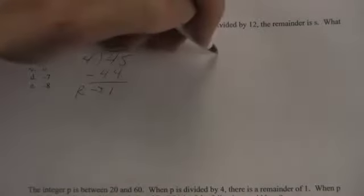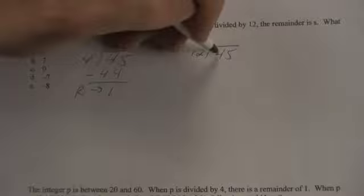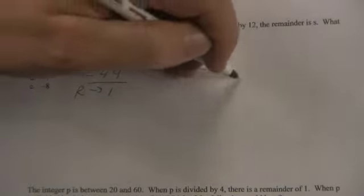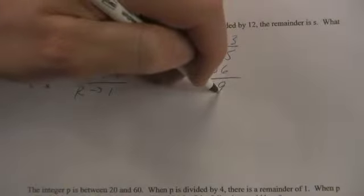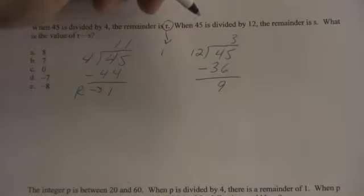Now when 45 is divided by 12, the remainder is s. So we do 45 divided by 12. 12 goes into 45 three times. 3 times 12 is 36. So 45 minus 36 is 9. There's a remainder of 9 in this part of the problem, so s equals 9.